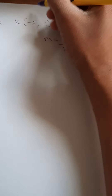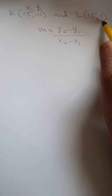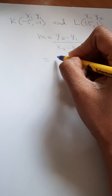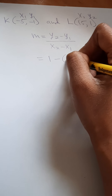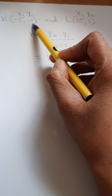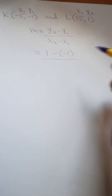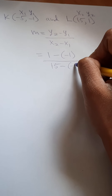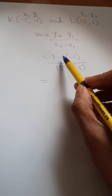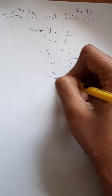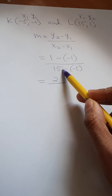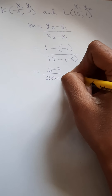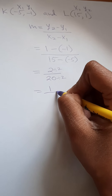This is my first point K, so we're putting x1, y1. This is my second point L — x2, y2. Plugging into the formula: y2 is 1, minus y1 which is -1 (in brackets), over x2 which is 15, minus x1 which is -5. The two signs become positive: 1 plus 1 is 2 on top, and 15 plus 5 is 20 on the bottom. Dividing top and bottom by 2 reduces the fraction to 1 over 10.